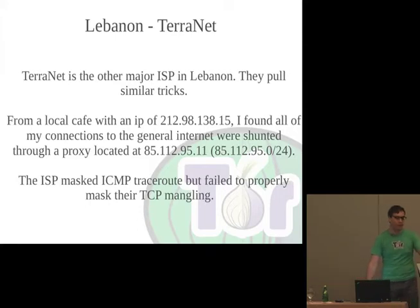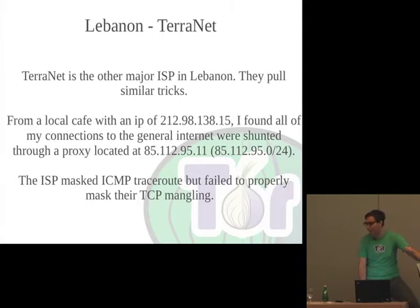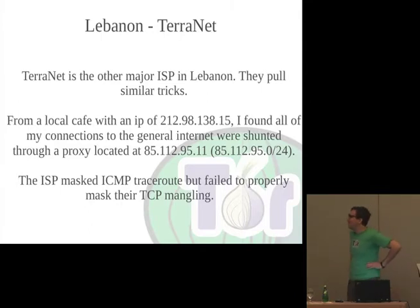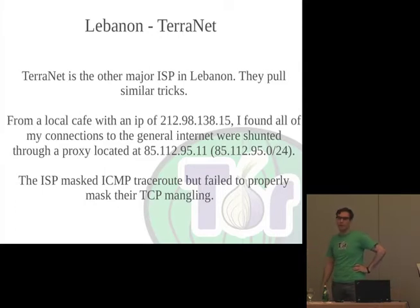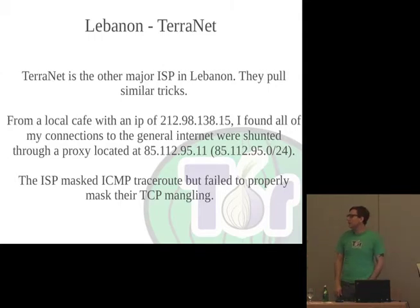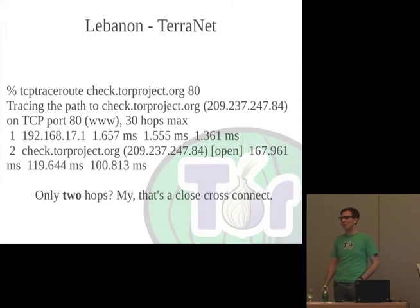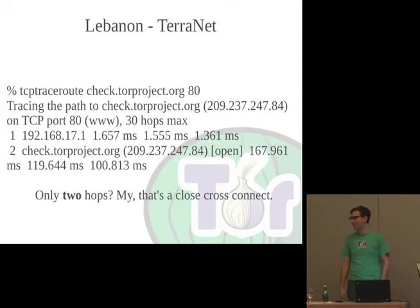Worst ISP name in the world — if I was a Middle Eastern ISP, I would not call myself Terranet. They shunt you through 85.112.95.11 — that whole slash-24 is full of sketchy man-in-the-middle stuff. They do mask ICMP traceroutes, so there's an engineer there that does understand TCP/IP, which was surprising. I've met a couple of guys that started these ISPs with interesting ideas about running networks, and I think some people in the audience have spent time in Lebanon and know that computer systems there are, well...